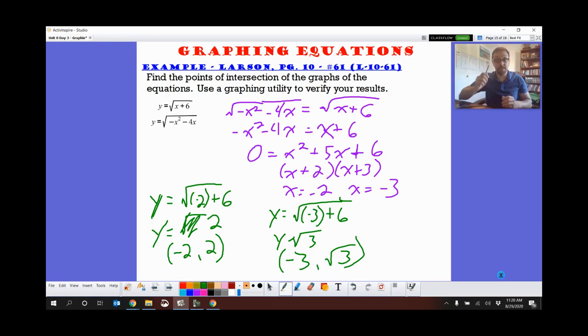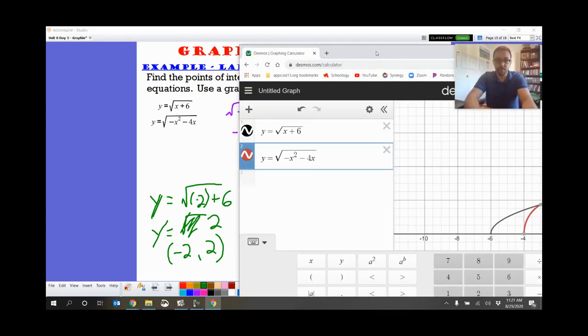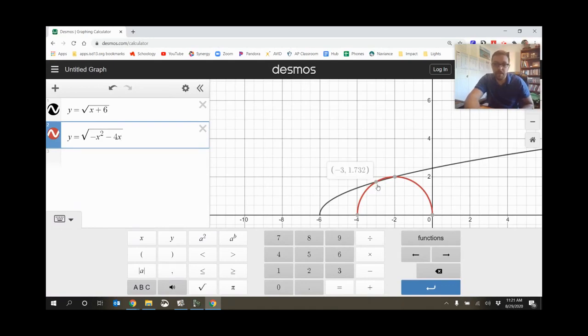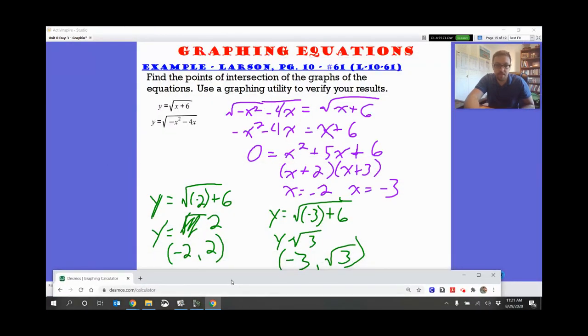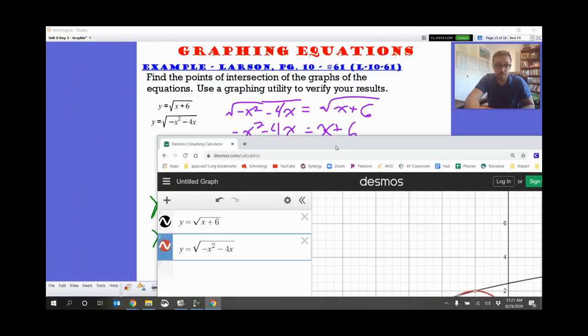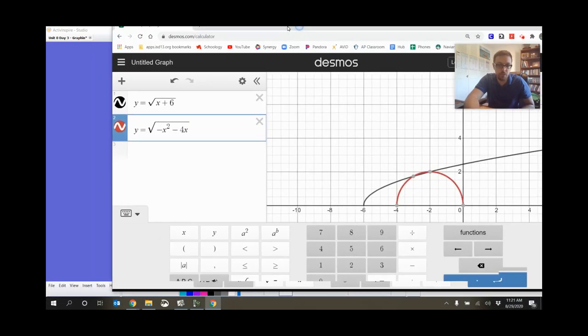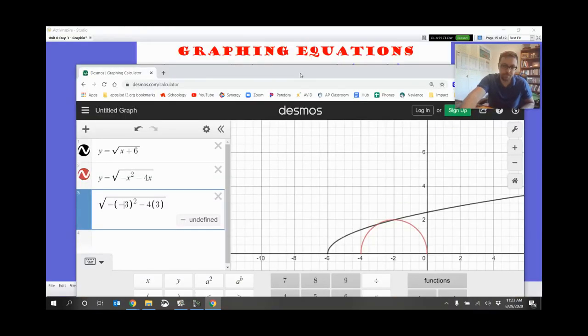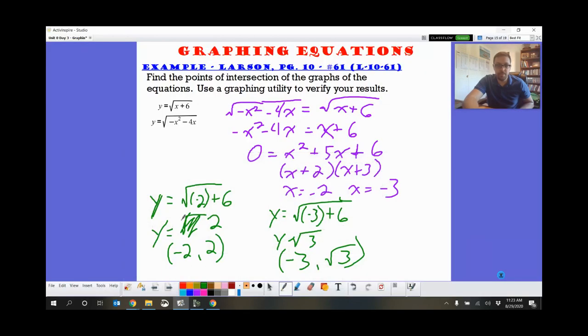Now remember, this one has extraneous solutions possibly. So we have to check those out. We're actually going to use Desmos to verify that. And we will take a look at our graph. All right, so we've got two solutions. We've got negative 3 and 0.732. That is our square root of 3 one. So that's good. And then the other one should be at negative 2 and 2. And that checks out. Cool. So I think that's about it for today.